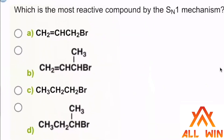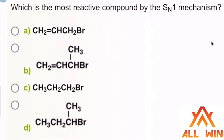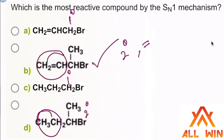Which is the most reactive compound by the SN1 mechanism? Option B is the answer. Option B forms an allylic secondary carbocation, and it also has a double bond, making it more stable than option A, which is primary, and option C, which is secondary but has no double bond. Option B is the most reactive towards the SN1 mechanism.